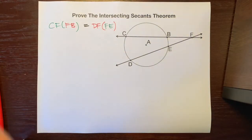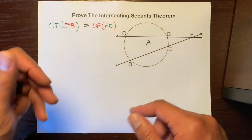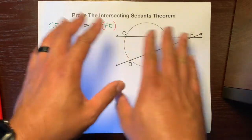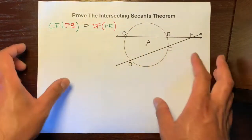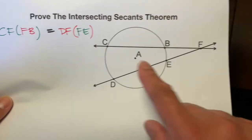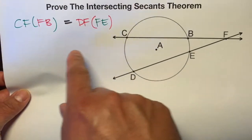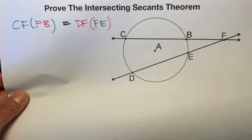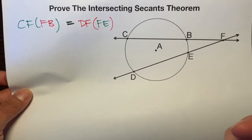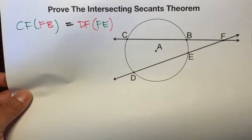Press pause and take a moment to analyze this circle and analyze this formula right here — this is the intersecting secants theorem. Press pause and make sure that you understand what it is, then unpause.